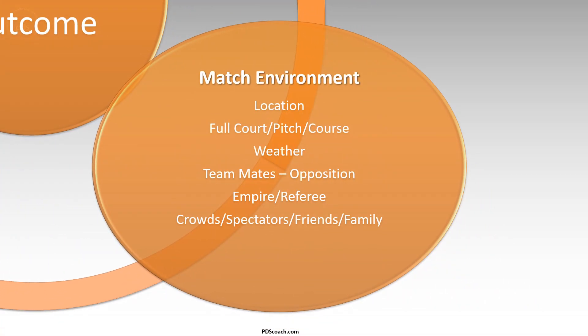Moving to the match environment — the main elements we want our athletes to be aware of include location as an environmental influencer, full court or pitch size, weather, teammates, opposition, umpires, referees, calls, crowds, spectators, friends and family. All of these can be environmental issues, never mind the rules of the game. So what are we doing in practice that cultivates and develops these areas? Some we can't control, but we can control our interpretation — for example, we can't control the weather, but we can cultivate how we interpret it within our practice environment.